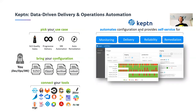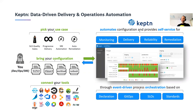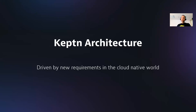Best of all, Keptn doesn't execute things itself — Keptn is an orchestrator. Keptn connects to your tools, so you can bring the tools that work well in your particular environment. Everyone has different environments and favorite tools with existing investments. Keptn takes your configuration, takes your use case, and really automates the configuration of your tools, connects them, and provides the use cases as a self-service through a declarative approach. Everything is persisted, stored, and versioned in Git, centered around service level objectives. All communication from Keptn to your tools is based on Cloud Events standards — no proprietary integration.